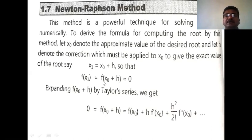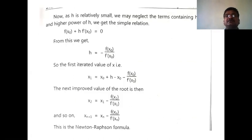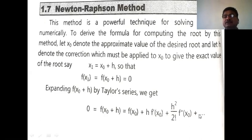We expand this using Taylor's theorem. The expansion of f(x₀ + h) is: f(x₀) + h·f′(x₀) + (h²/2!)·f″(x₀) + (h³/3!)·f‴(x₀) + ... We neglect the terms from h²/2!·f″(x₀) onward — all the remaining terms — because h is small.